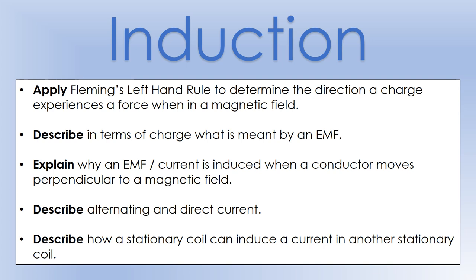In this video we're going to take a look at why EMFs and currents are induced in different scenarios, specifically looking in detail at why we get an EMF when we move a conductor perpendicular to a magnetic field. Then we'll go on to look at alternating and direct currents and how we can use those to induce a current from a stationary coil in another stationary coil.